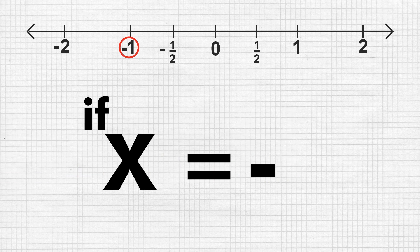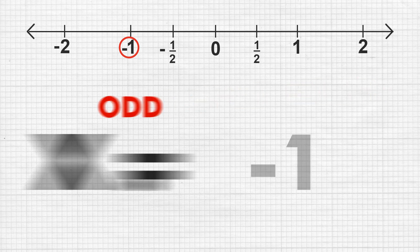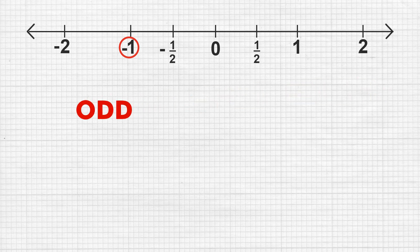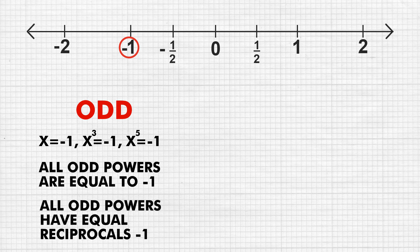So if x equals minus 1, the odd powers are x, x³, x⁵, and so on. All odd powers equal minus 1, and all odd powers have equal reciprocals which also equal minus 1.